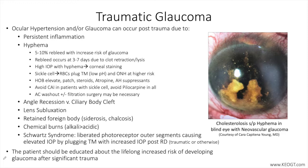IOP-lowering medication should be utilized to control pressure, and most classes of topical drops are appropriate, including prostaglandin analogs, beta blockers, alpha agonists, and carbonic anhydrase inhibitors. Although miotics should be avoided due to possible increased inflammation with compromise of the blood-eye barrier, as well as the potential to alter the anatomy of the angle with breaking of clots and exacerbation of traumatic effects on the aqueous humor outflow system.